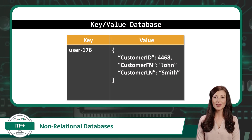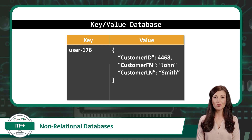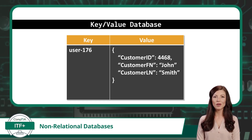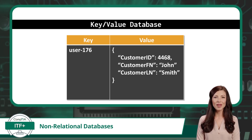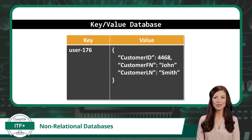In line with the CompTIA exam objectives, I will present two different non-relational database types. The first is a key-value database. This works very much like how it sounds: you store objects based on a unique key, and each key points to a specific item or value. Key-value databases are fantastic for scenarios where you need fast, direct access to data. In web applications, this type of database could be used for caching, session management, or user profiles.